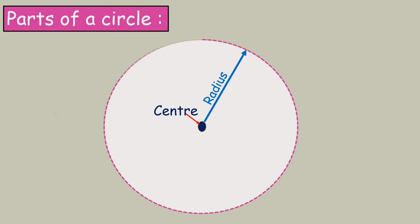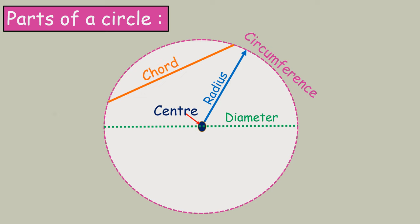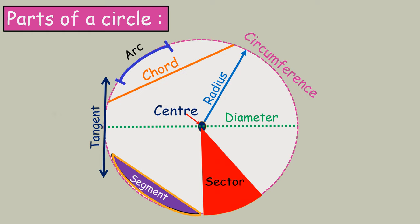Now, let us see the parts of a circle. The parts of a circle include center, radius, circumference, diameter, chord, tangent, arc, segment, sector, and secant.